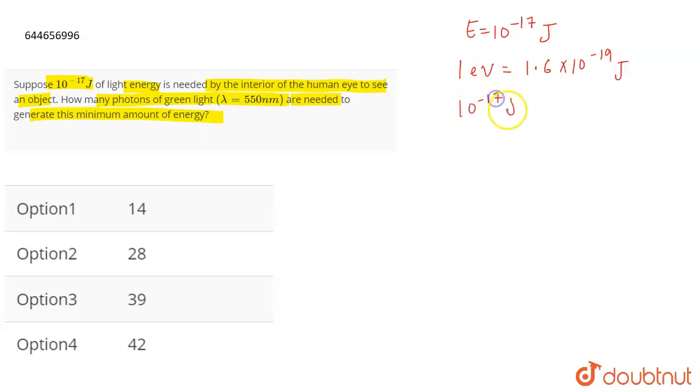So, 10 to the power minus 17 joules will be equal to 10 to the power minus 17 divided by 1.6 into 10 power minus 19 in electron volts. This will come out to be 0.655 into 10 to the power 2 electron volts.